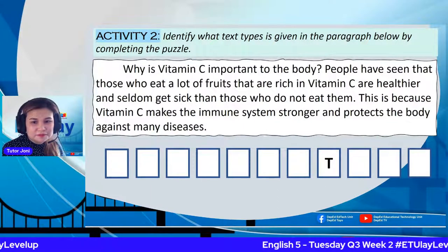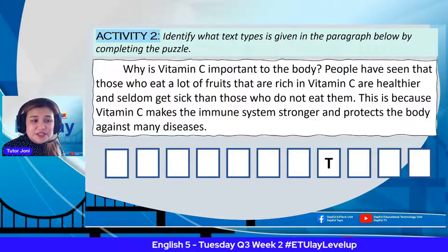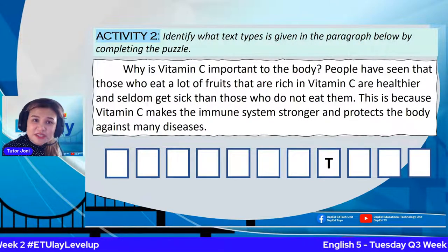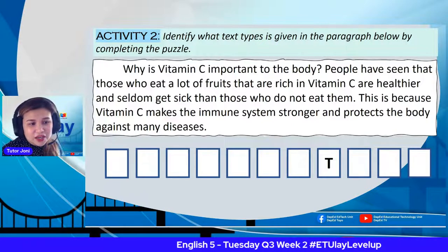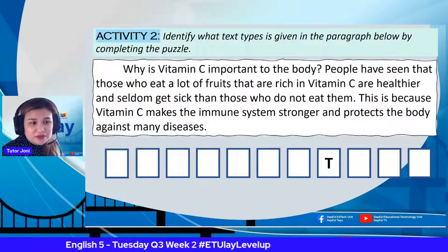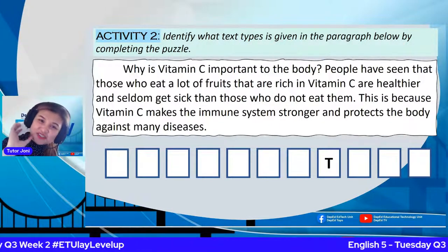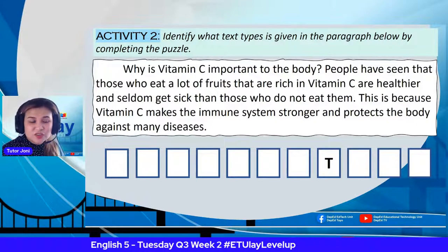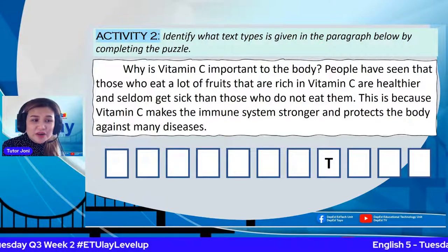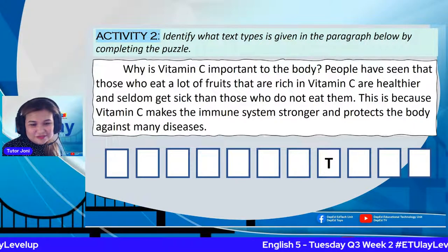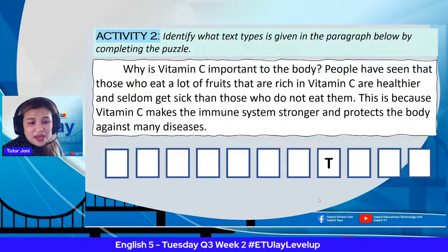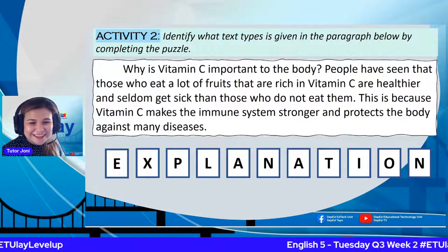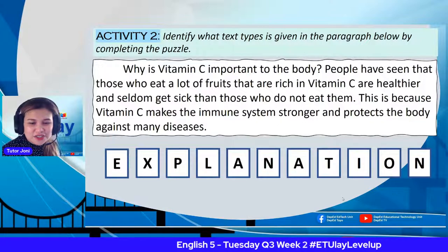Number three: 'Why is Vitamin C important to the body? People have seen that those who eat a lot of fruits rich in Vitamin C are healthier and seldom get sick compared to those who do not eat them. This is because Vitamin C makes the immune system stronger and protects the body against many diseases.' The clue is the letter T — and the correct answer is explanation.